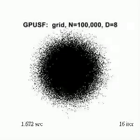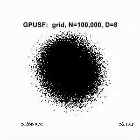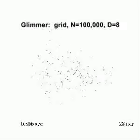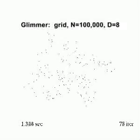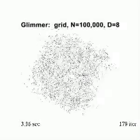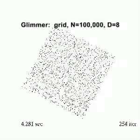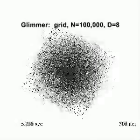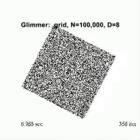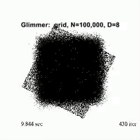On a 100,000-point grid, GPUSF terminates before an accurate layout is computed. On the same 100,000-point grid, we can see Glimmer run at multiple levels from coarse to fine. As it handles progressively larger subsets of the points, Glimmer successfully finds an accurate layout. It has better convergence properties than GPUSF, which tends to fail on large datasets.